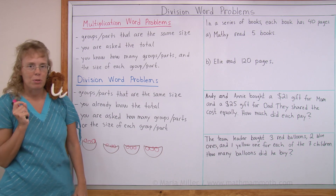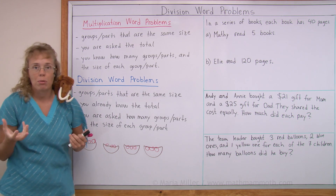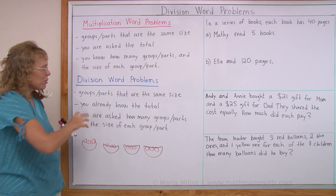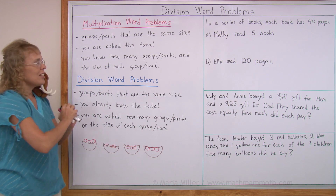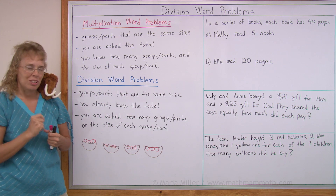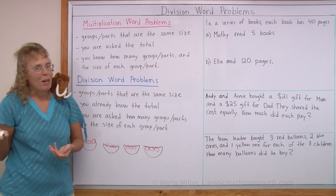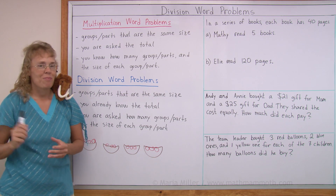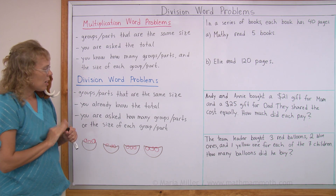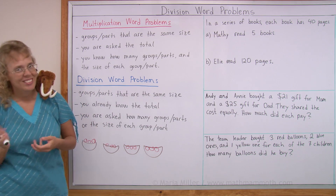If I want to write a division word problem, I would tell you the total — I have 24 apples or 40 apples. And then I want to put them into baskets. Either you have to solve how many baskets, or how many apples go into each basket. So I might tell you there are 40 apples and four baskets — how many apples in each? Or I might tell you there are 40 apples and I want to put 10 apples in each basket — how many baskets?